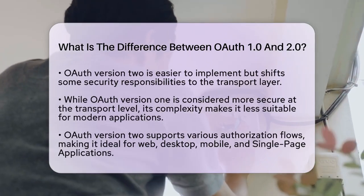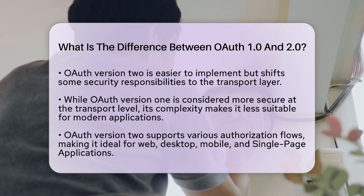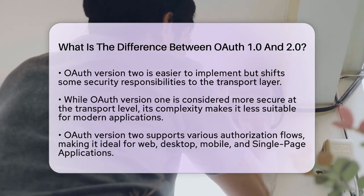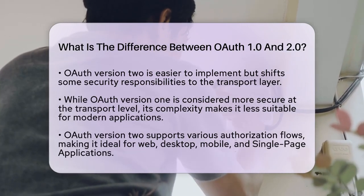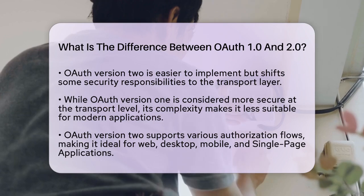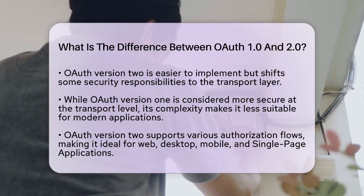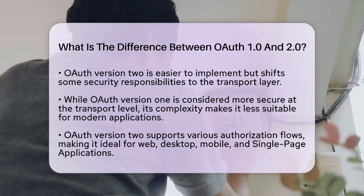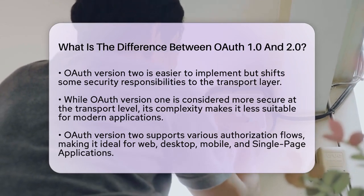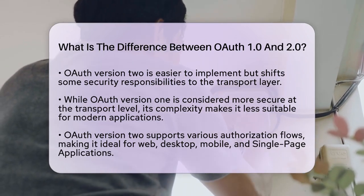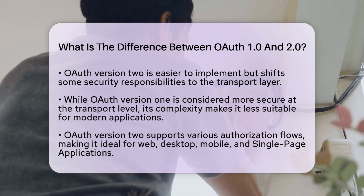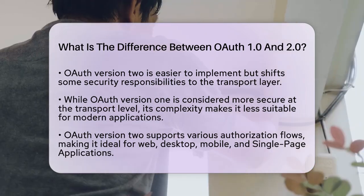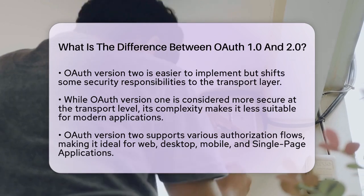In practical applications, OAuth Version 1 is less suitable for modern web applications, especially single-page applications and mobile applications. It is largely being phased out in favor of OAuth Version 2. The latter is widely adopted and supports various authorization flows, making it ideal for web applications, desktop applications, mobile applications, and single-page applications.